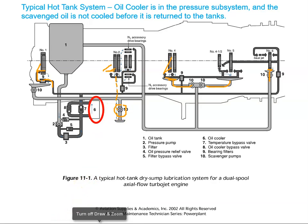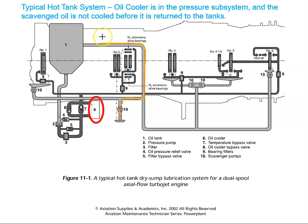Once the oil comes back through the scavenge pumps it then goes back towards the sump. What's not shown here is a deaerator — we want to be able to take the air out of the oil before it goes into the tank. So there will be a deaerator somewhere along here that takes the air out of the oil, and then we have the hot oil going back into the tank.